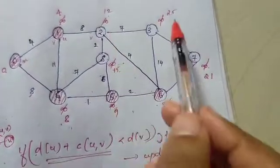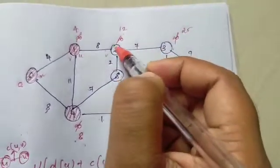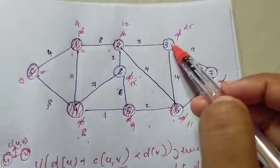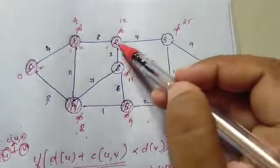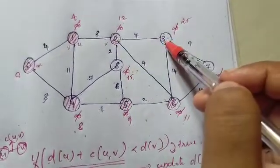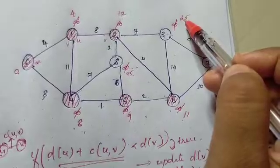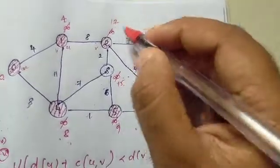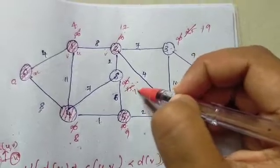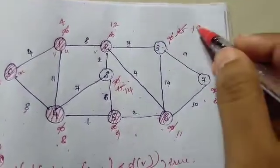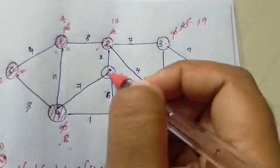Current distances: 12, 15, 25, 21. The minimum is 12, so we select vertex 2. Vertex 2 connects to vertex 3, vertex 8, and vertex 6 (already visited). For vertex 3: d(u) is 12, c(u,v) is 7, so 12 plus 7 is 19, which is less than 25 — update to 19. For vertex 8: 12 plus 2 is 14, which is less than 15 — update to 14. Distances now: 21, 19, 14.